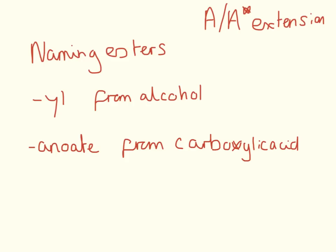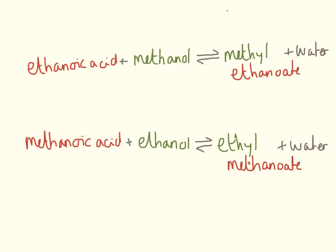This next section is slightly trickier and you only need to know it if you are aiming for the very top grades or want to do A-level chemistry. When we name esters, the '-yl' part comes from the alcohol and the '-anoate' part comes from the carboxylic acid. This allows us to identify the original alcohol and carboxylic acid an ester came from. For example, ethanoic acid and methanol make methyl ethanoate and water, while methanoic acid and ethanol make ethyl methanoate and water.